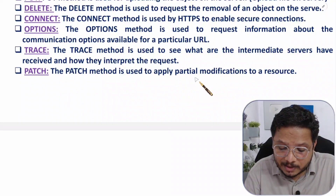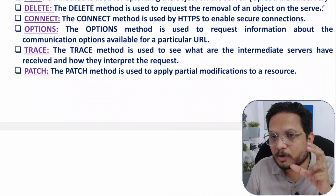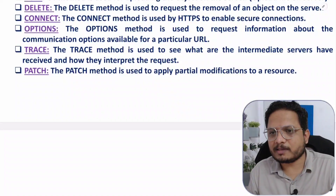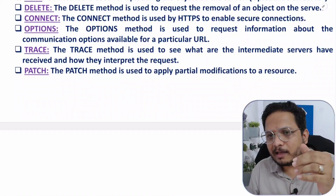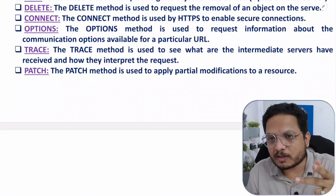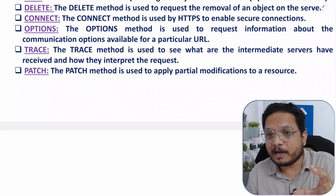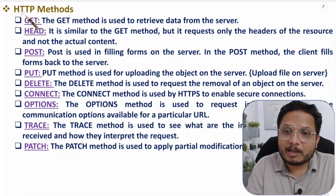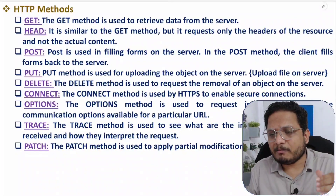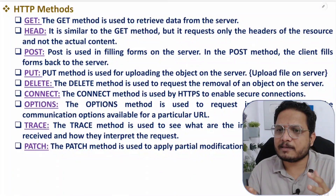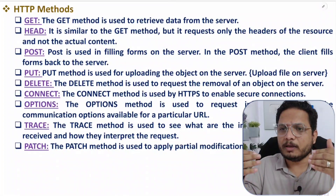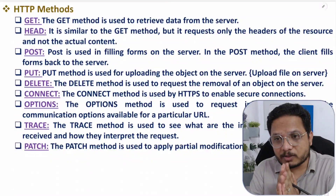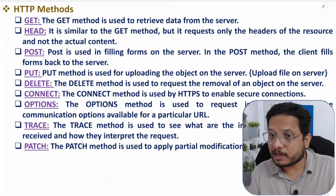The PATCH method is used to apply partial modifications to resources. For example, if you have a file and want to modify only part of it, you use PATCH for that partial modification. These are the HTTP methods through which we practically access websites on the internet. I hope you understood — if you have any questions, note them in the comments. Thank you for watching.